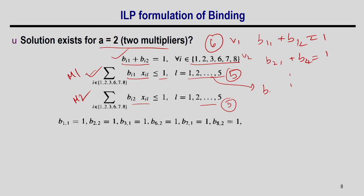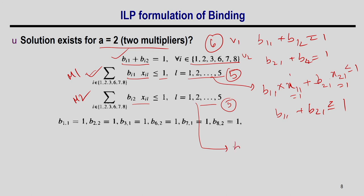For timestamp 1, multiplier 1: B11×X11 + B21×X21 ≤ 1, which since X11=X21=1 simplifies to B11+B21 ≤ 1 — only one of ops 1 or 2 can map to multiplier 1. For multiplier 2 at ts1: B12+B22 ≤ 1 — only one of ops 1 or 2 maps to multiplier 2. Combined, these constraints determine the assignment of operations 1 and 2.